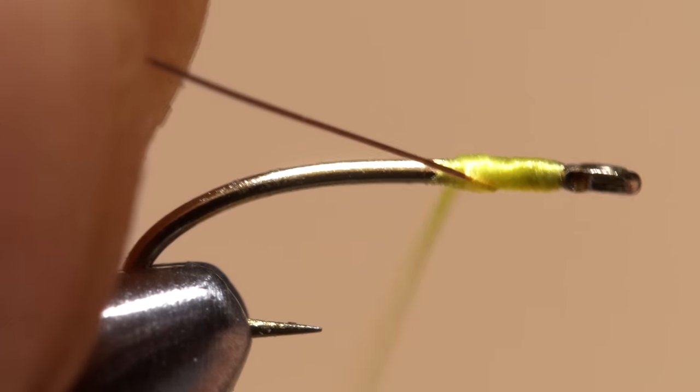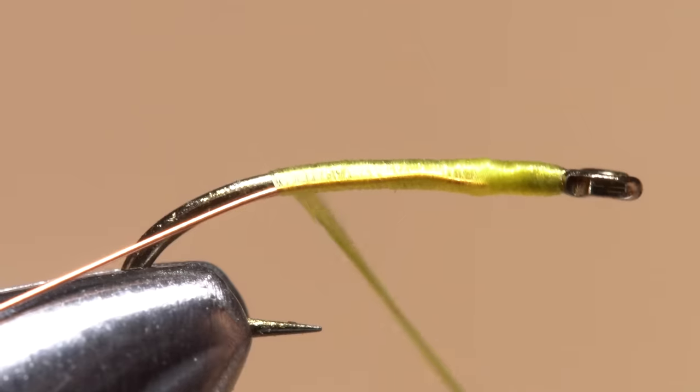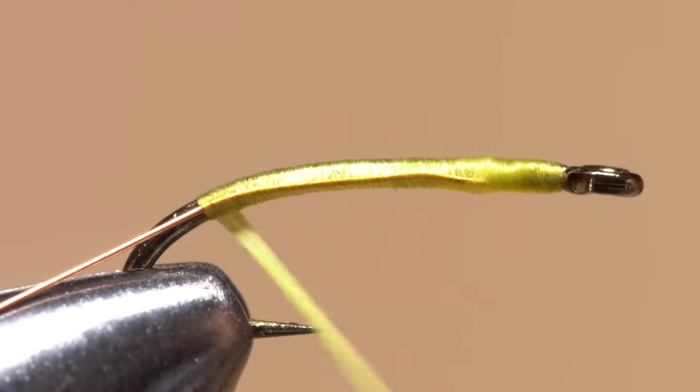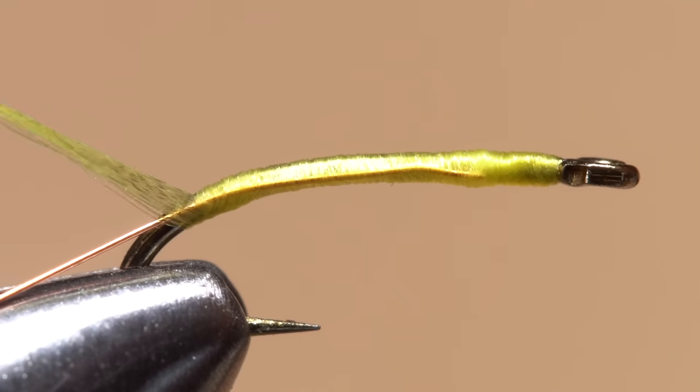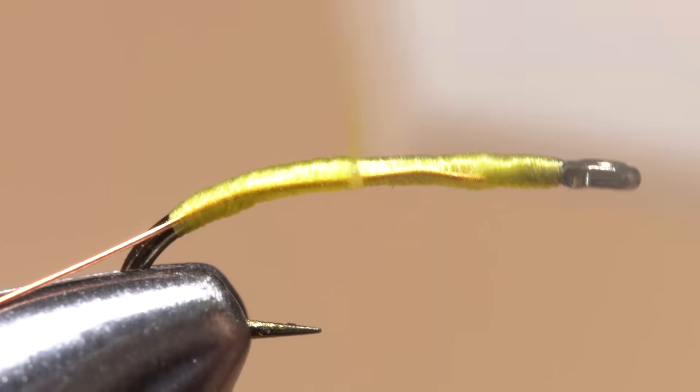Keep taking slightly overlapping thread wraps to bind the wire to the near side of the hook, well down into the bend. Return your tying thread forward to a little ways behind the hook eye.